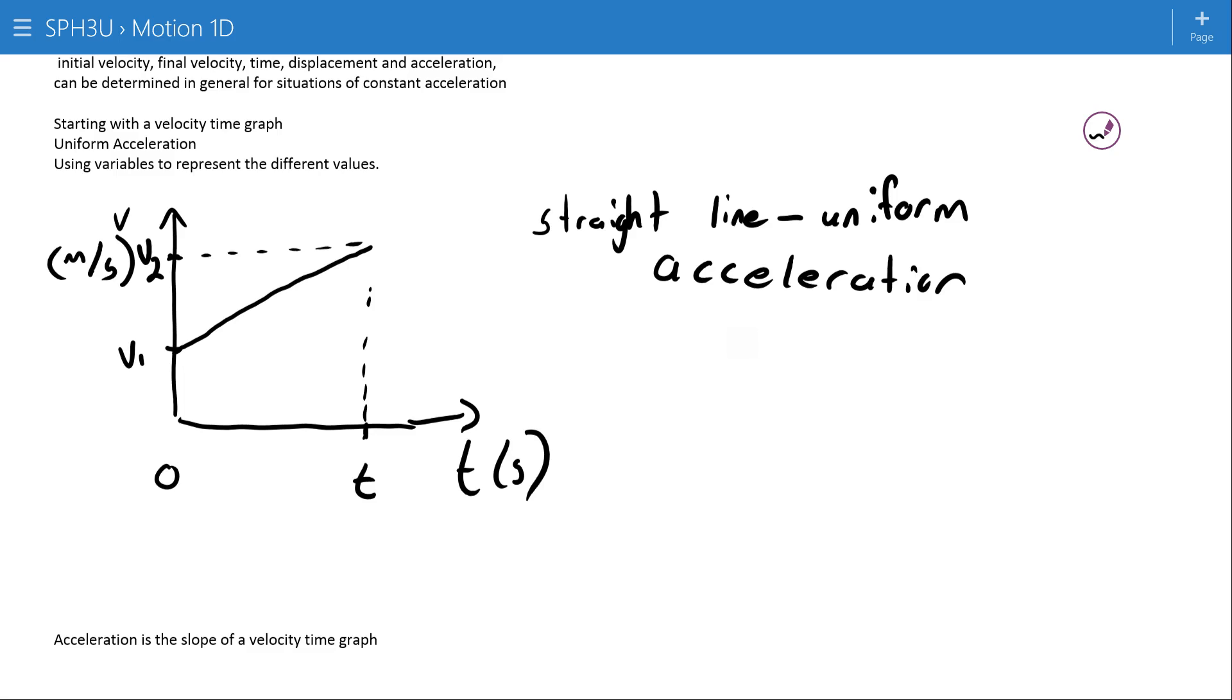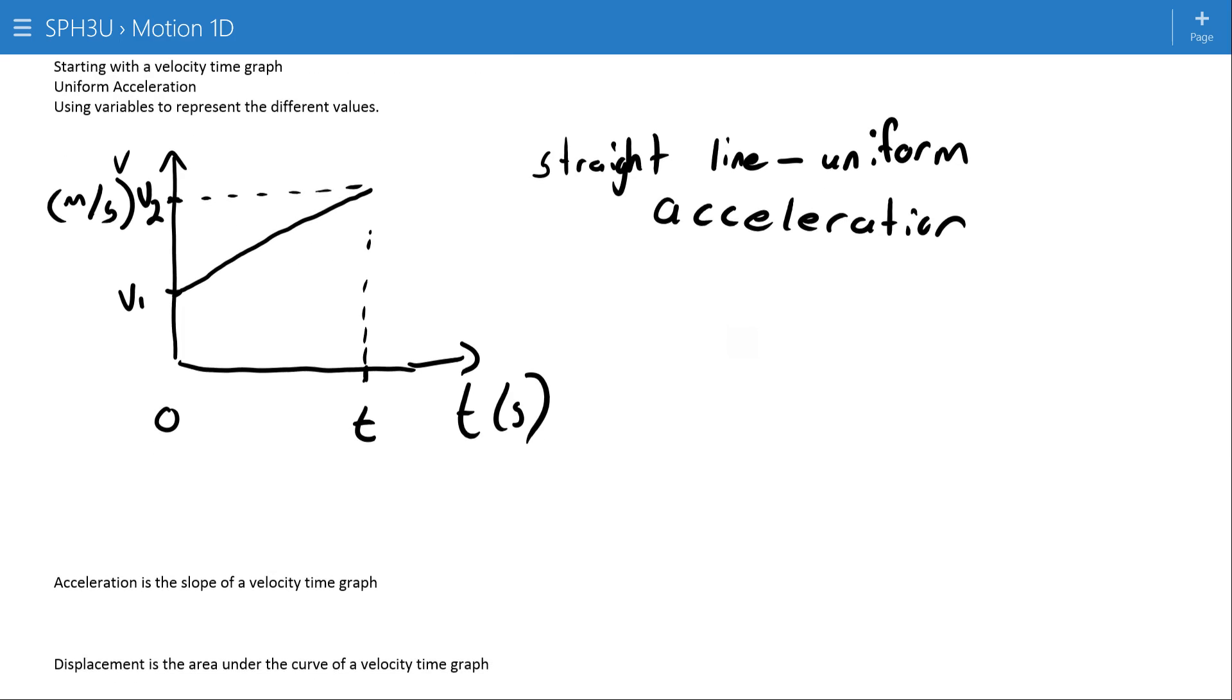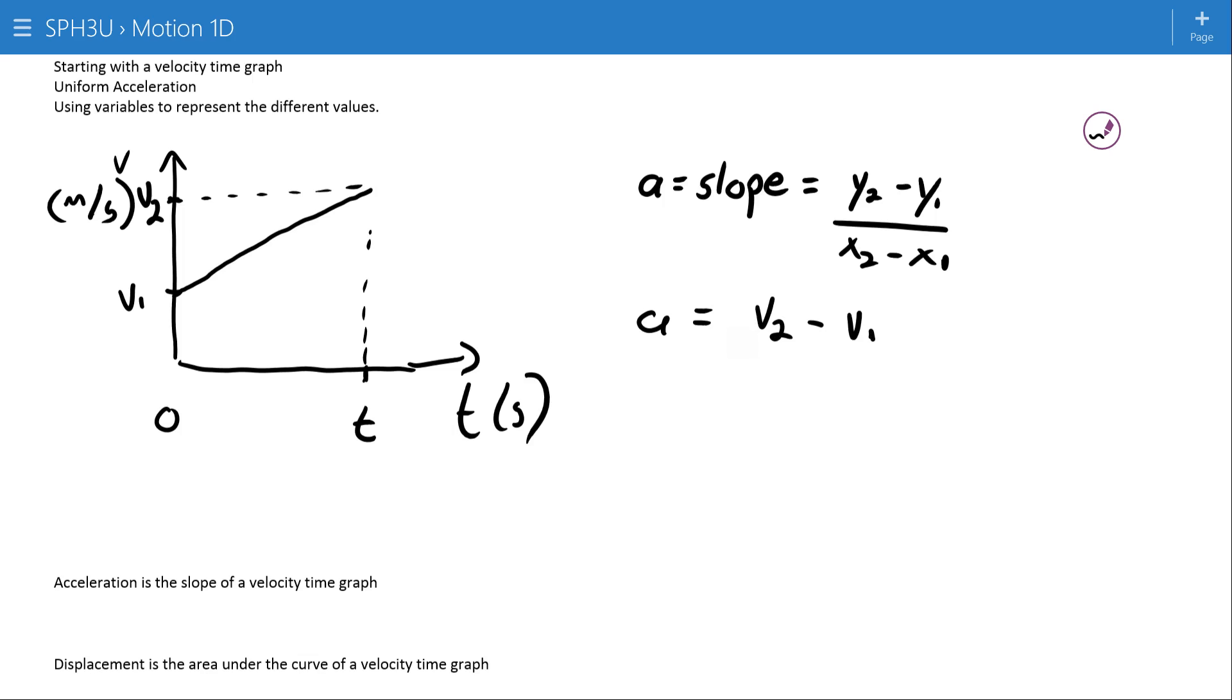The first equation, and we gave this in a previous lesson as the definition of acceleration, recognizes that acceleration is the slope of a velocity time graph. So if we say that acceleration is equal to slope, then we can say that's equal to y2 minus y1 over x2 minus x1. Acceleration is equal to v2 minus v1 divided by t minus zero. And we can simply write that acceleration is equal to v2 minus v1 over time. This is the first of our five equations of motion.